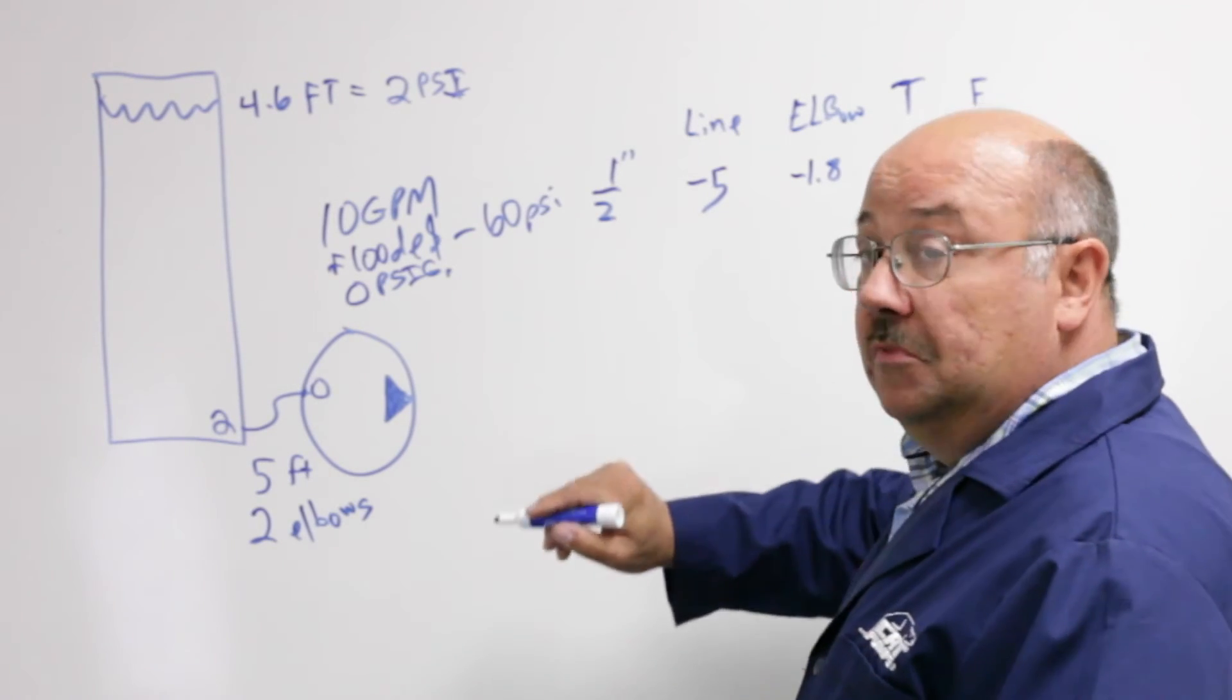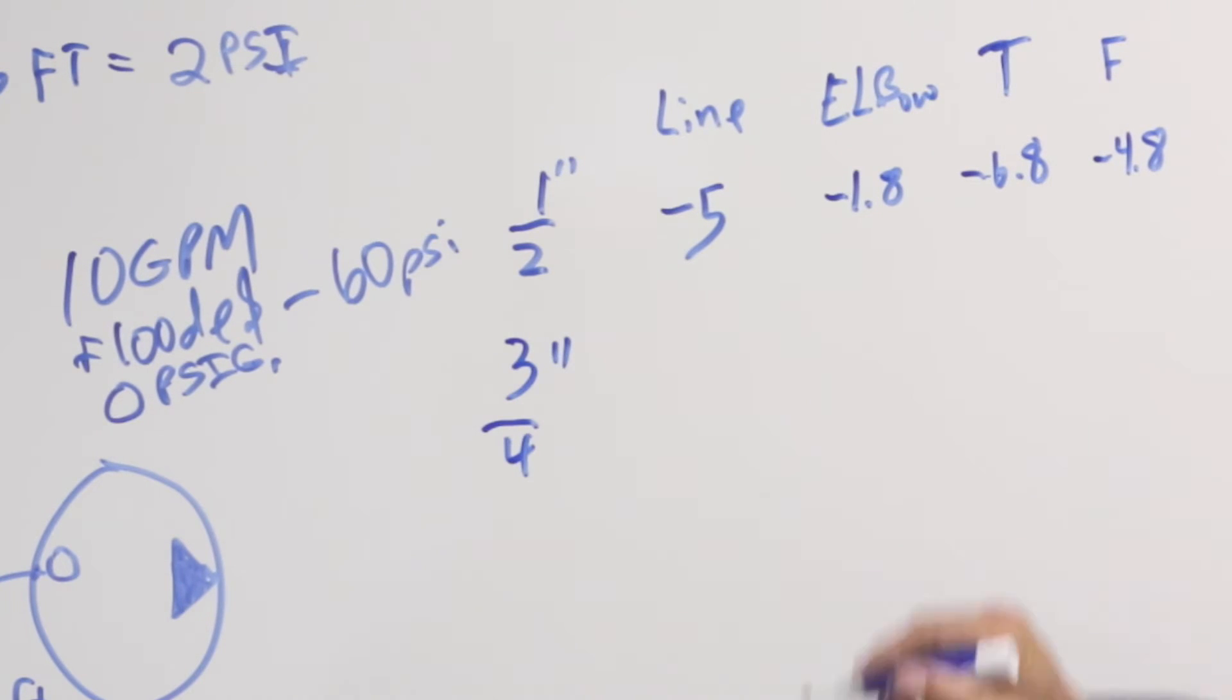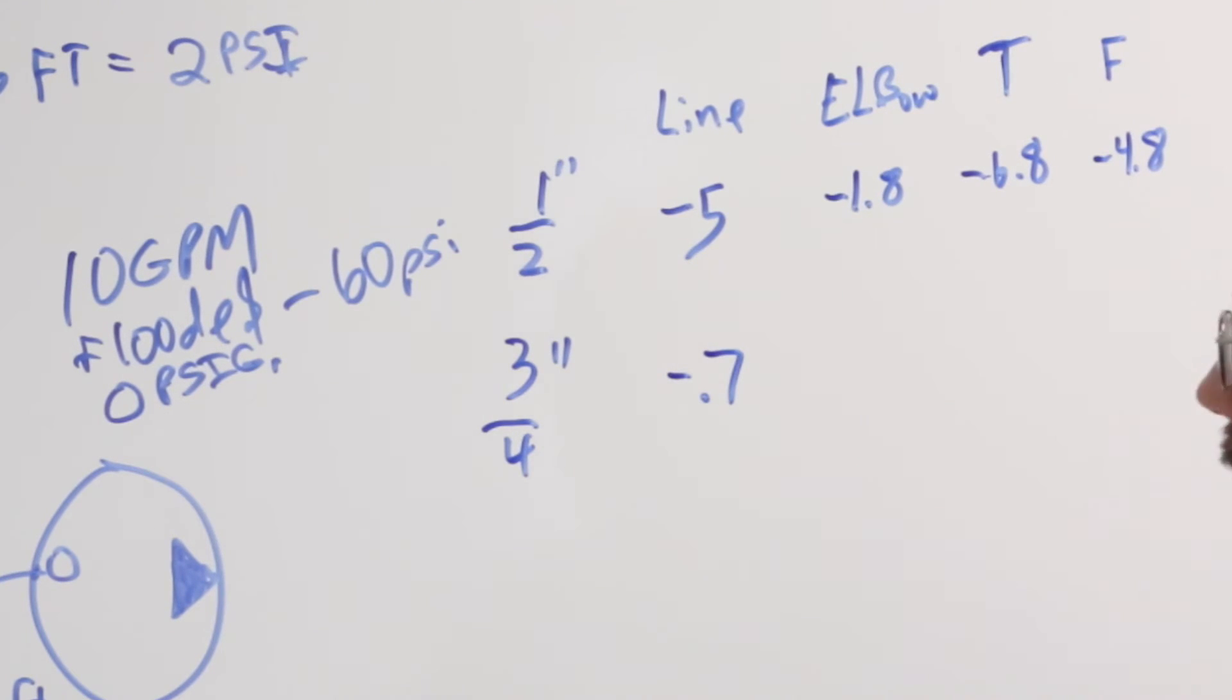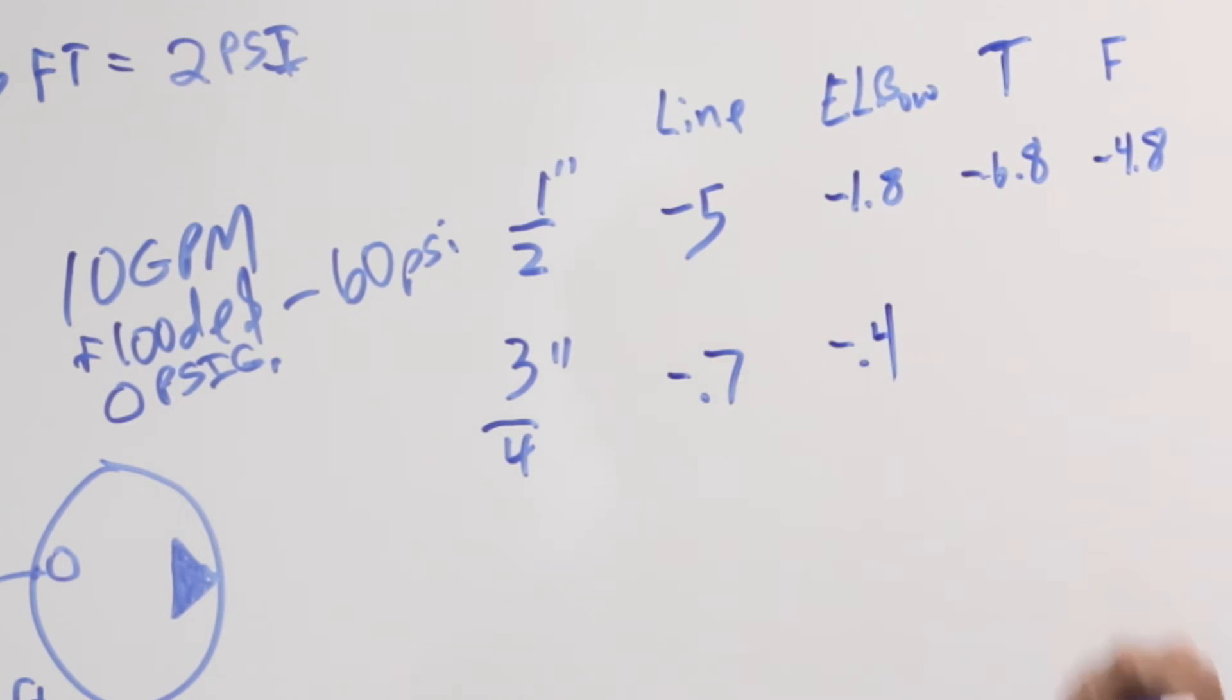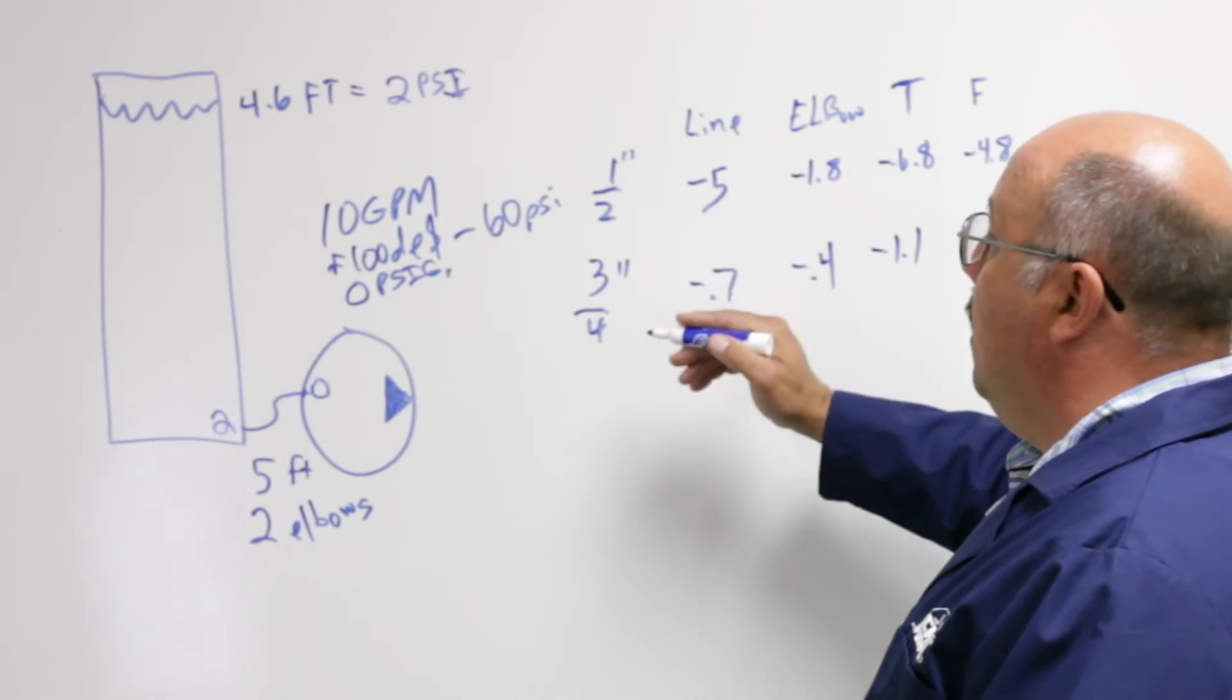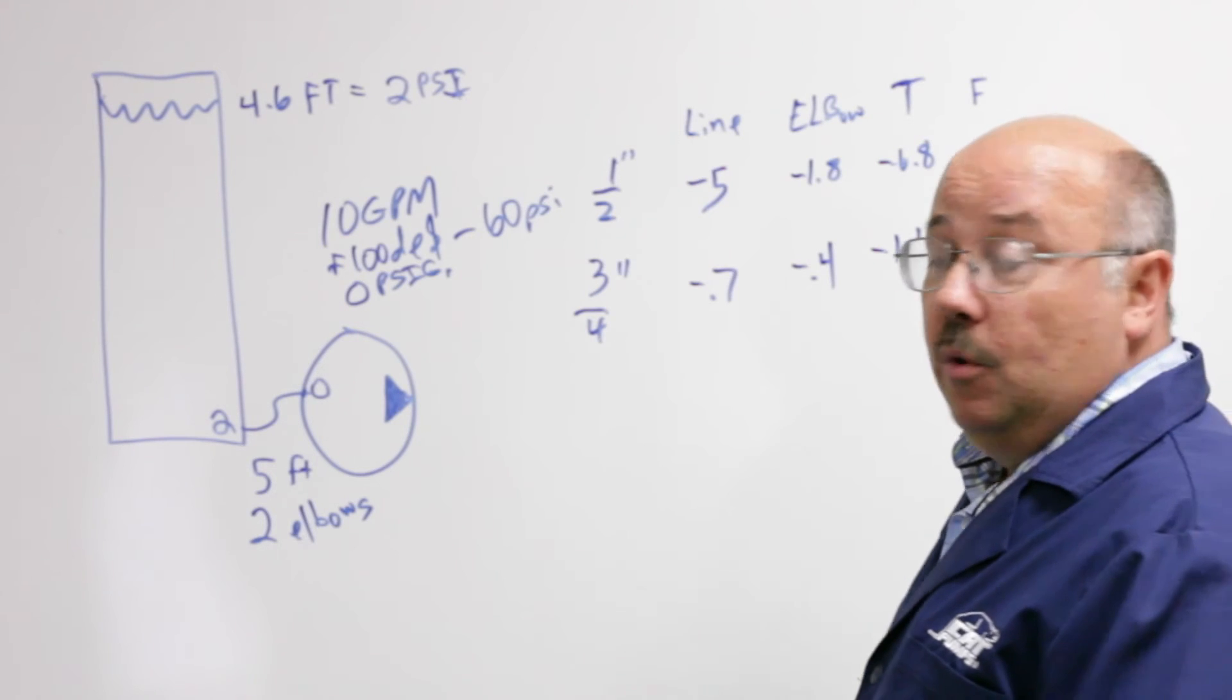Let's jump up to the next size, the three-quarter inch. We look at the tables and get that this drops negative 0.7 PSI. Quite a difference from a half inch line. A couple of elbows is another minus 0.4 PSI for a total of minus 1.1 or a final of positive 0.9 PSI. We've made quite an improvement just from going to a half inch to a three-quarter inch line.